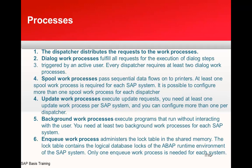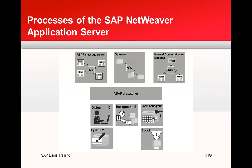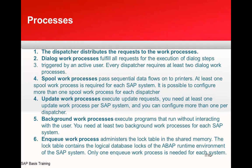The dispatcher distributes requests to the work processes. Dialogue work processes fulfill all requests for the execution of dialogue steps triggered by an active user — every dispatcher requires at least two work processes. Spool work processes pass sequential data flows to printers; at least one spool process is required, though more can be configured per dispatcher. Update work processes execute update requests; at least one is needed per system, and more can be configured per dispatcher.